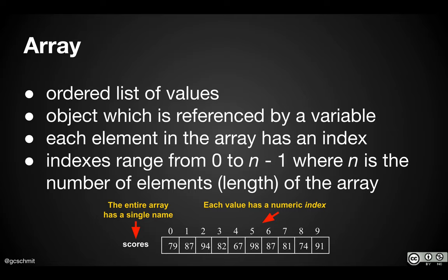We do reference arrays by variables. Each element in the array has an index, like each character in a string has an index. Strings are not arrays of characters — strings are their own class. That said, I'll be comparing a lot of stuff to strings today because there are a lot of similarities. For example, when we index elements in the array, it starts at zero, just like the index of the first character in a string.